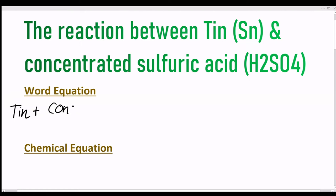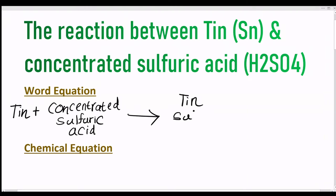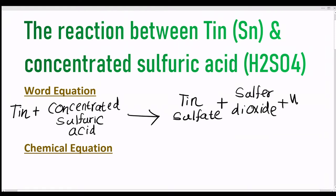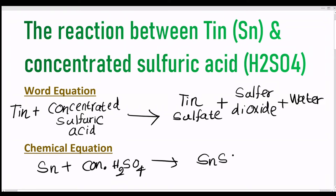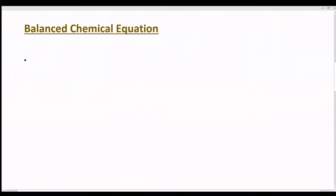Tin reacts with concentrated sulfuric acid to produce tin sulfate, sulfur dioxide, and water. This is the balanced chemical equation between tin and concentrated sulfuric acid.